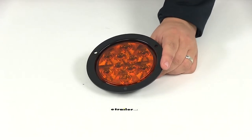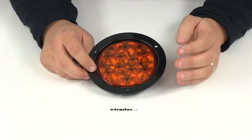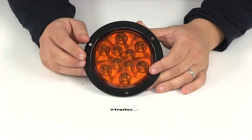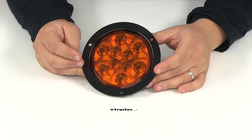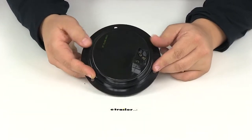Today we're going to review part number STL42AB. This is a sealed 4-inch round amber LED trailer light from Optronics. The amber round trailer light is a combination of parking and turn signal lights. It features a sealed waterproof housing and lens unit.